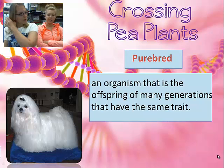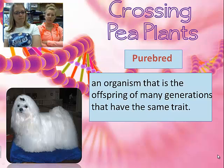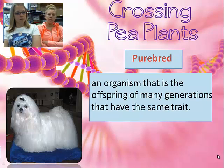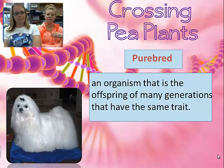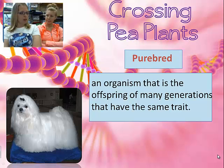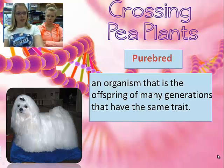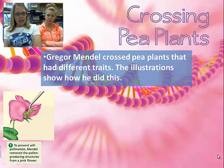Mendel decided he was going to cross different pea plants. One way you can cross plants is with purebred crossings — two organisms that are identical to one another. This is a common concept with dogs: if you take a mama golden retriever and cross it with a daddy golden retriever, you get baby golden retrievers. Purebred means their whole family — grandparents, great-grandparents — are all golden retrievers. They never mated with a poodle or any other dog, which is why purebreds are so expensive.